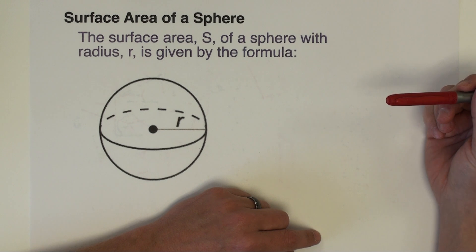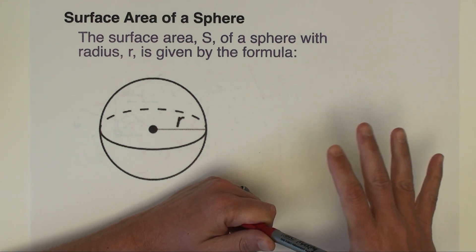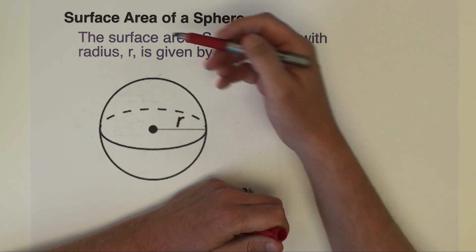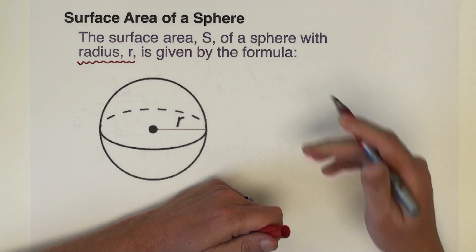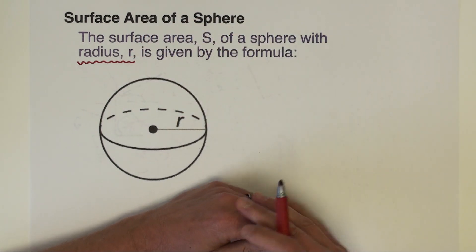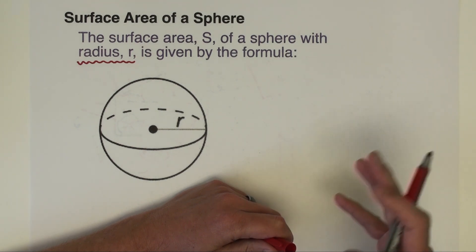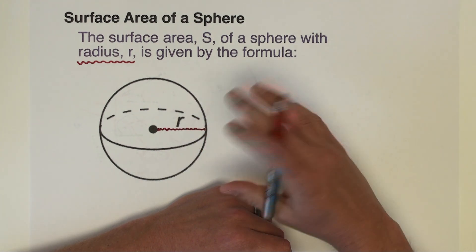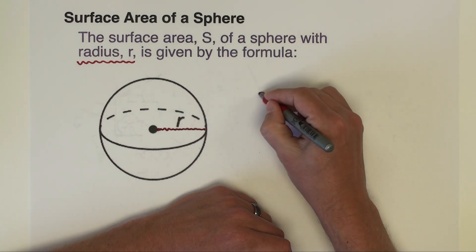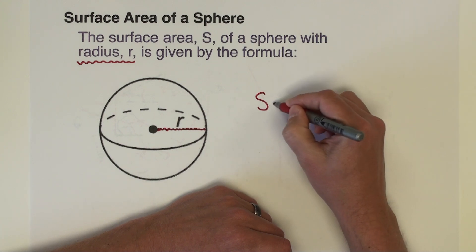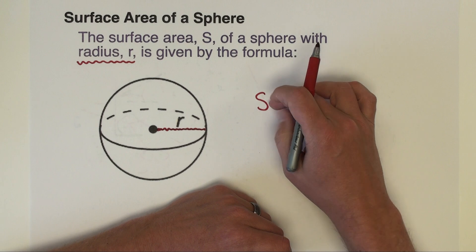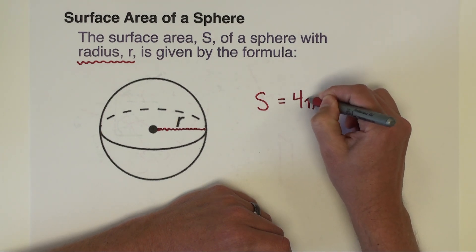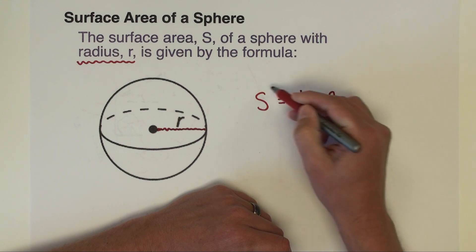Let's start with the surface area formula for a sphere. Both the surface area and volume of a sphere have quite simple formulas because there's only going to be one independent variable — just the radius of the sphere. Everything's going to be in terms of the radius. The surface area S is simply four times pi times the radius squared.